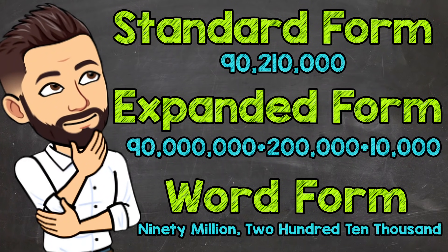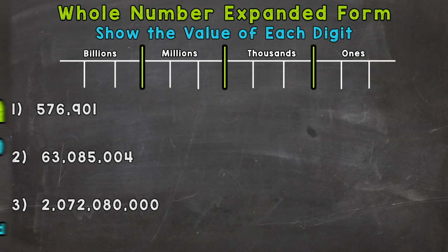Welcome to Math with Mr. J. In this video I'm going to cover expanded form, word form, and standard form. So let's start with expanded form. When it comes to expanded form, we take numbers and expand them out to show the value of each digit. Expanded form really helps our overall number sense and understanding of numbers. So we have three examples that we're going to go through together in order to get this down.